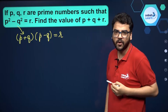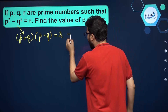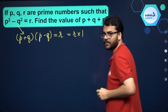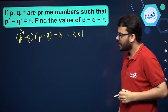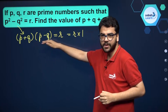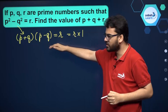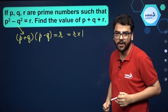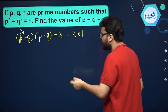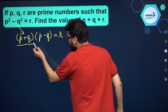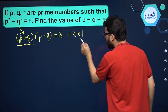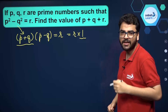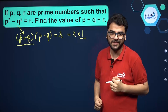Now r is a prime number, so we can write r as r into 1. You see over here we have p plus q into p minus q on one side, and r into 1 on the other side of the equation. We can never take p plus q to be equal to 1, because it is given in the question that p and q are prime numbers.